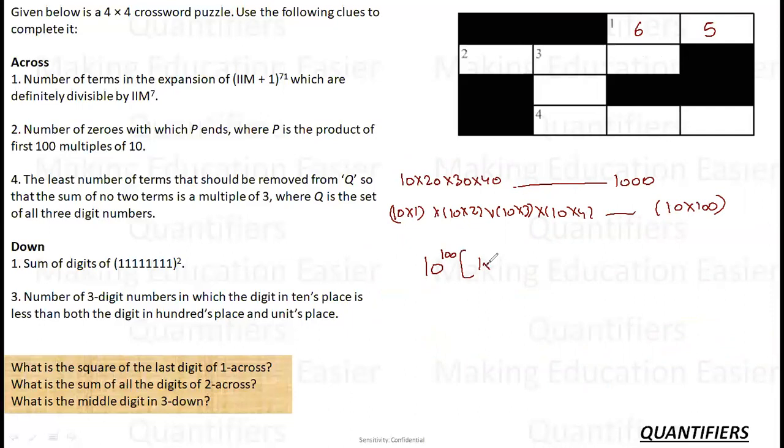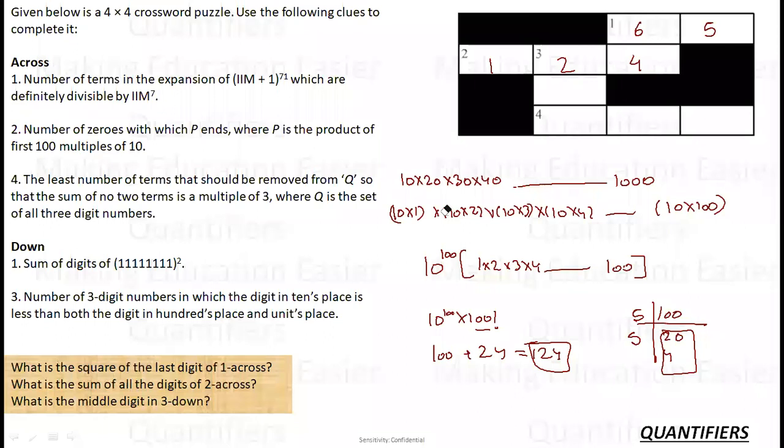So there are 100 terms and each term is having a 10. So it is 10 raised to the power 100 into 1 into 2 into 3 into 4 up to 100. Now what is this? Nothing but 100 factorial. So it is 10 power 100 into 100 factorial. Now what is the number of 0s in 100 factorial? We know that 0 is made by 5 and 2. We just need to check the highest power of 5. 100 divided by 5 is 20, ignore the remainder. 20 divided by 5 is 4, ignore the remainder. Now it cannot be further divided. 20 plus 4, 24. So basically 100 zeros are there from the 10s, 24 zeros are there from the factorial. So net zeros would be 124. So the number at this place would be 124.